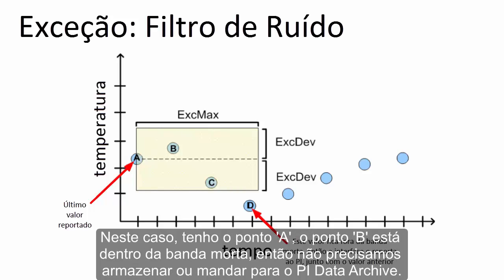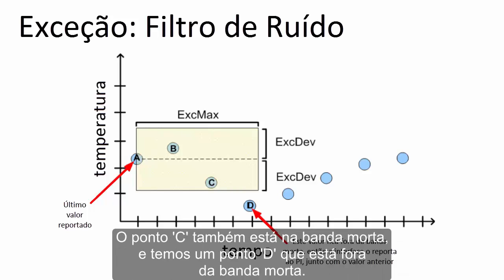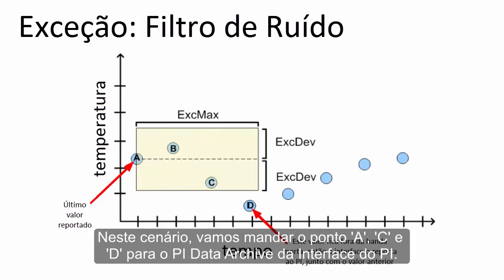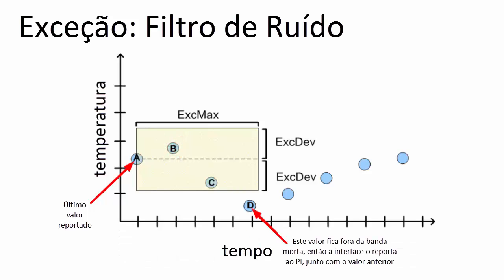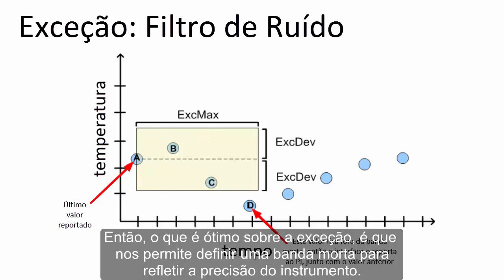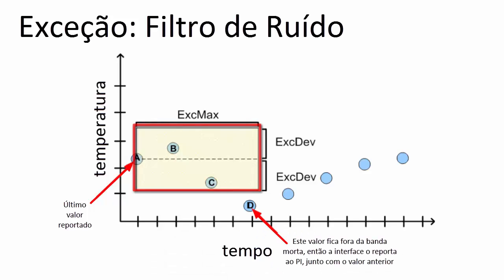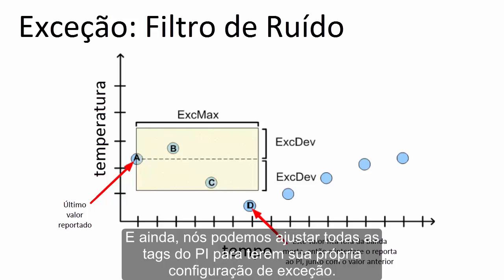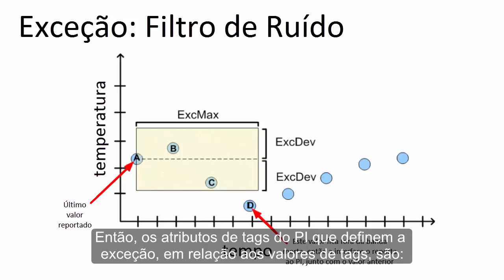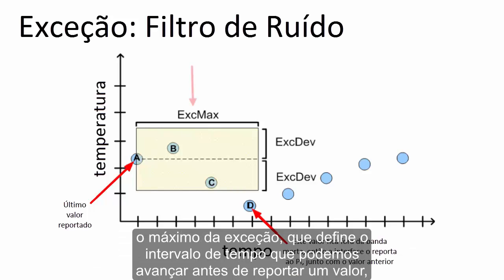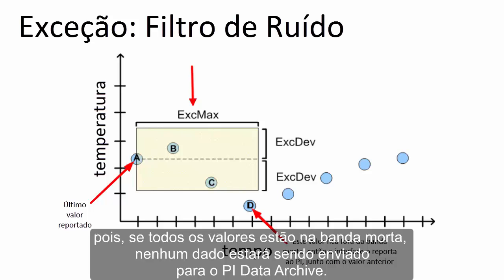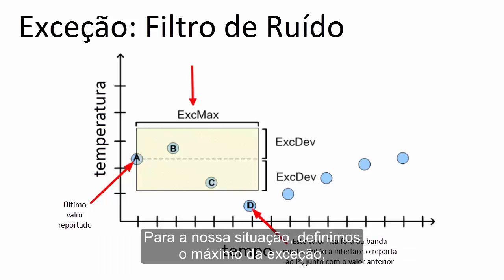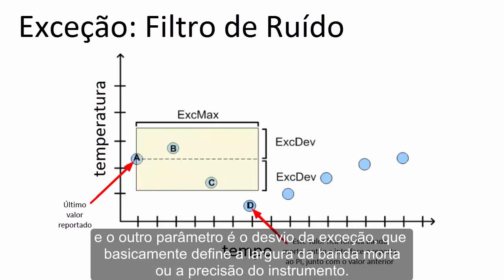Point A is coming in, point B is within the dead band so we don't need to store it or send it to the PI Data Archive. Point C is also within the dead band, and point D goes outside the dead band. In this scenario, we are going to send points A, C, and D to the PI Data Archive from the PI Interface. Exception testing allows us to define a dead band to reflect instrument precision, and we can individually tune all PI Tags to have their own exception setting. The PI Tag attributes that define exception are: exception maximum, which defines the length of time we can go before we must report a value — because if all values are within the dead band, no data is sent — and exception deviation, which defines the dead band width or instrument precision.